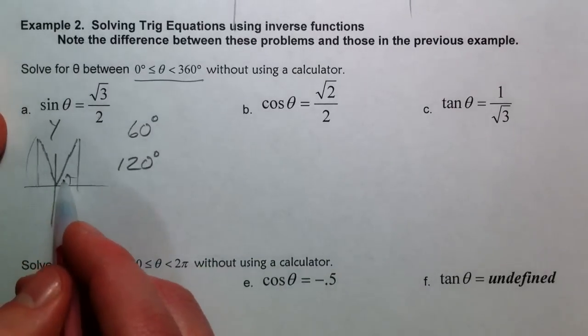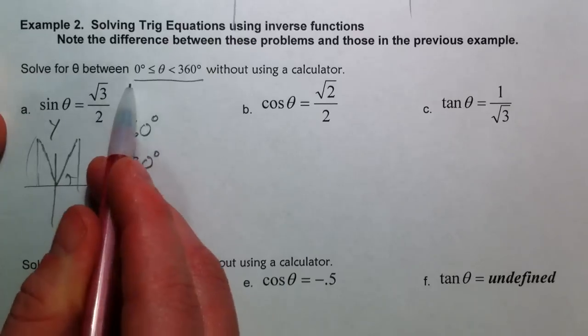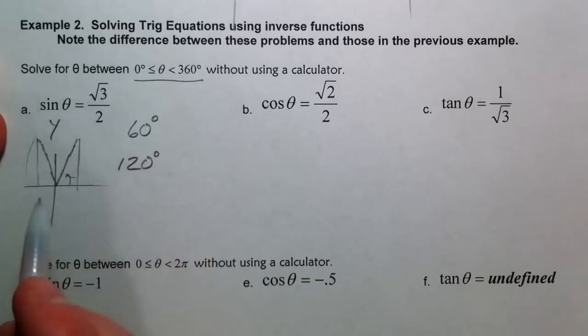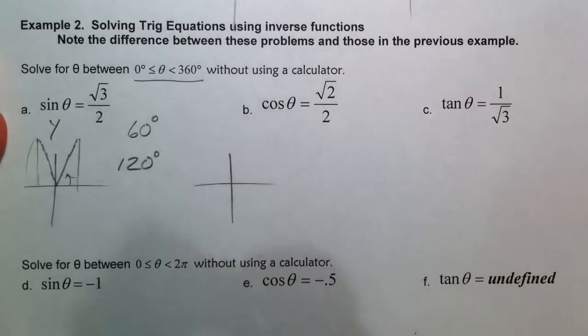Now we take both of these this time because we're not doing inverse sine of root 3 over 2, we're just saying what angles in between 0 and 360 give me this as the y value? Same way, cosine. Where's the cosine a positive root 2 over 2?